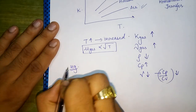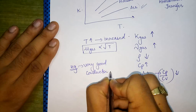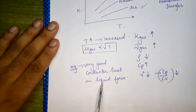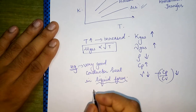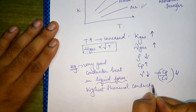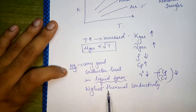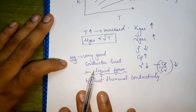Mercury is a very good conductor of heat in liquid form. Mercury at room temperature exists in the liquid form, and it has been found that mercury has the highest thermal conductivity among liquids. Mercury is also used as a thermometric liquid because of its high thermal conductivity, low vapor pressure, and very good volume expansion with heating.